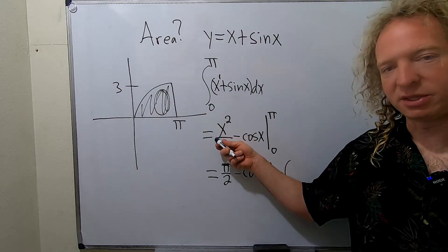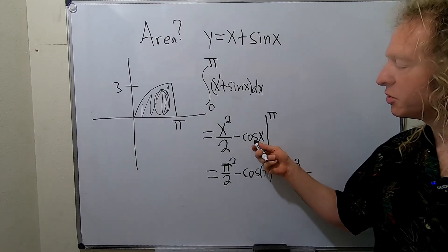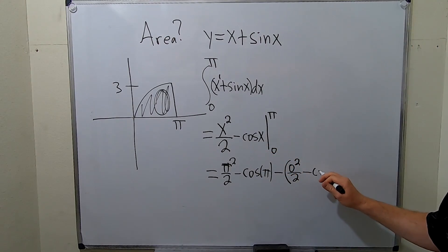Plugging in zero we get zero squared over 2. I'll even write it. Minus cosine of zero. So boom there we are.